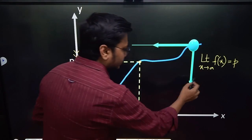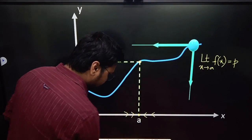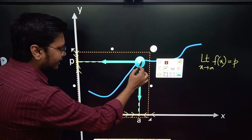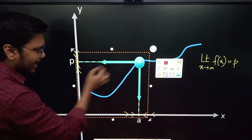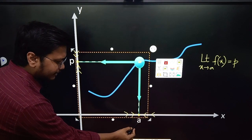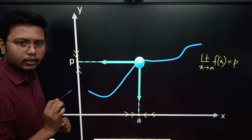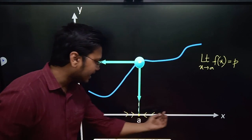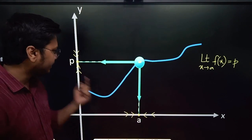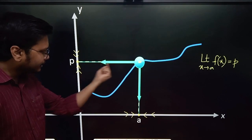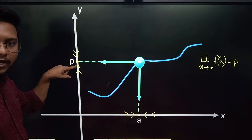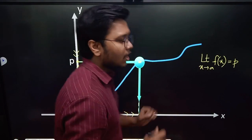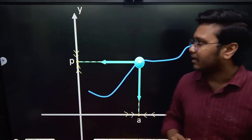As you can see the function I have here — if I place my pointer right at this point, you can see the arrows are pointing towards x equals to a, and the y value is pointing towards p. So when x is tending towards a, either from the left or from the right, you can see the horizontal arrow is pointing towards the point p. That means the limit is tending towards p.